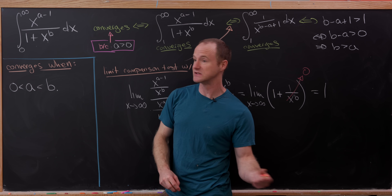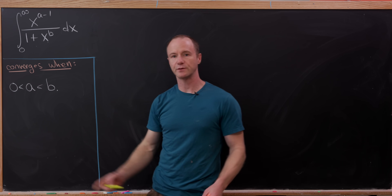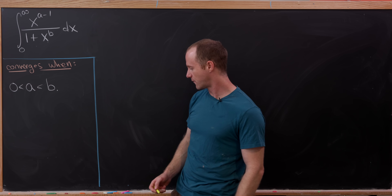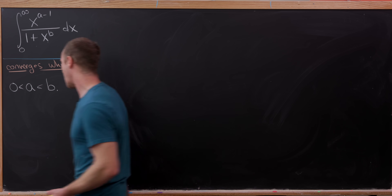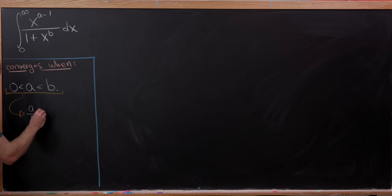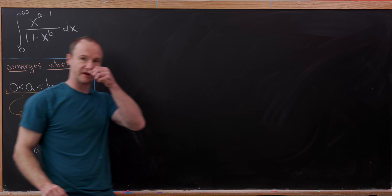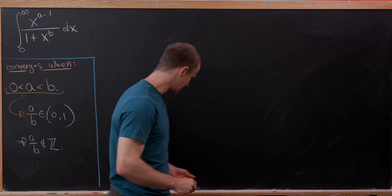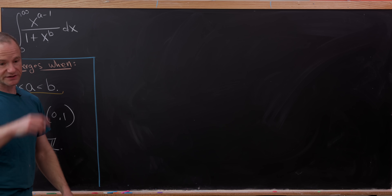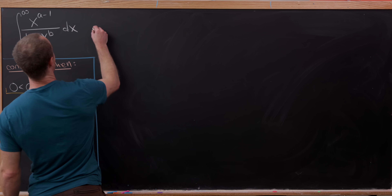That finishes our classification: the integral converges when a is bigger than 0 and less than b, i.e. 0 < a < b. Now let's calculate the value. Note that since 0 < a < b, a over b lies strictly between 0 and 1, so a over b is not an integer — this will be extremely important at the end. We start with the denominator 1 plus x to the b and write it in a certain way.